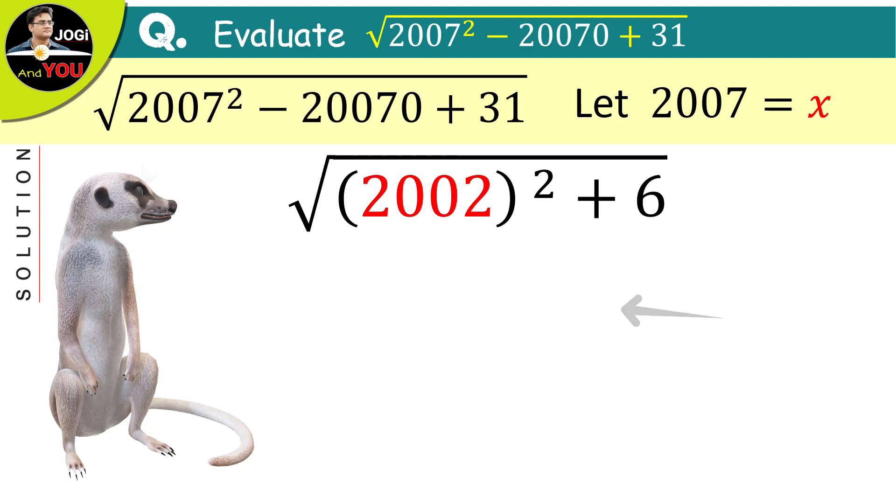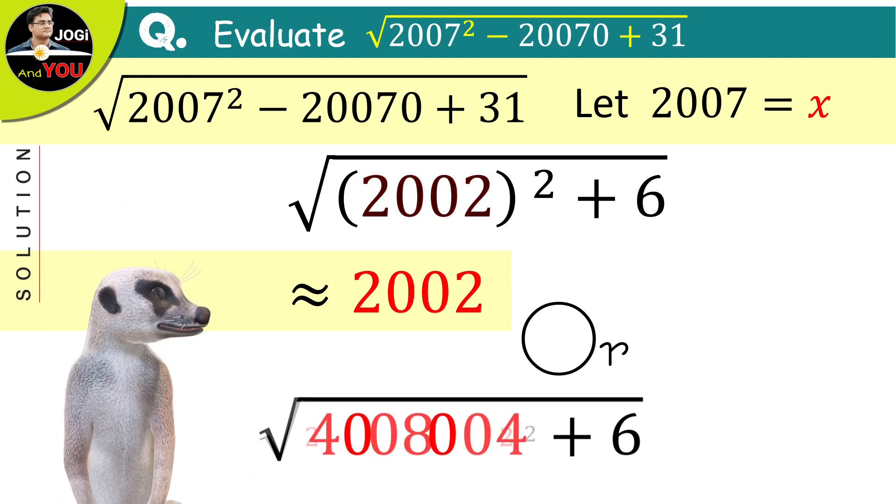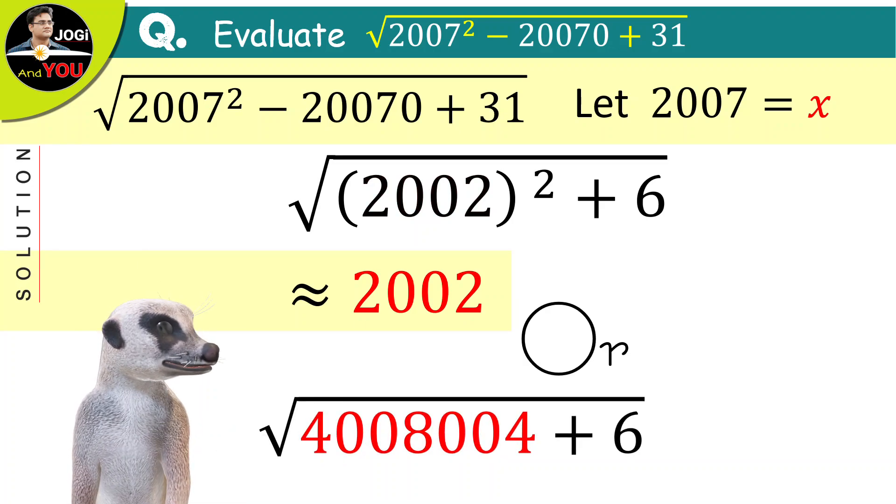So, here we can write the value in approach which will be 2002. And if we want to find its exact value, then we will first square 2002 which will be 4008004.